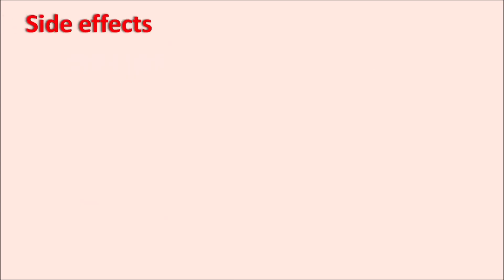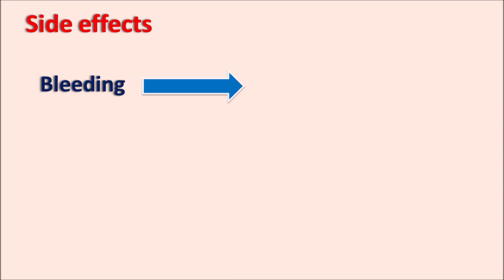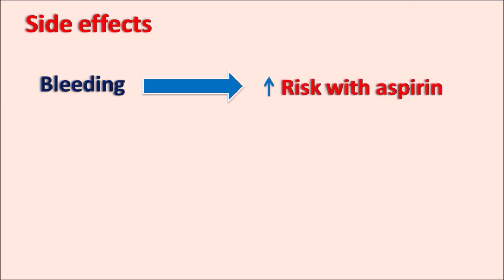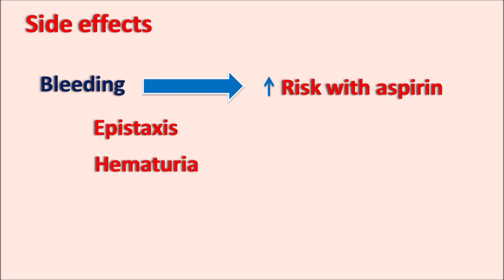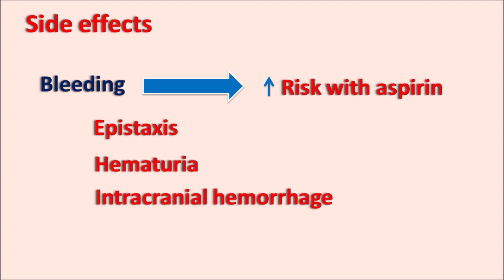The important side effect of clopidogrel is bleeding. The risk of bleeding is further increased with aspirin. Even though aspirin is sometimes combined with clopidogrel, care should be taken to minimize hemorrhage. Bleeding disorders can include epistaxis (nasal bleeding), hematuria (blood in the urine), and sometimes fatal intracranial hemorrhage. These side effects should be carefully monitored when clopidogrel is given.